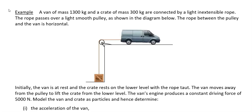There's going to be a tension going here which has to move the crate, and there is also going to be a tension going the other way which is pulling against the van. There would also be a tension going down from the pulley, and a tension going horizontally from the pulley as well. Initially the van is at rest and the crate rests on a lower level with the rope taut. The van moves away from the pulley to lift the crate from the lower level, and the van's engine produces a constant driving force of 5000 newtons.